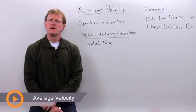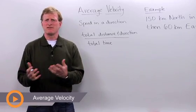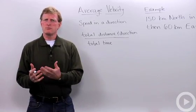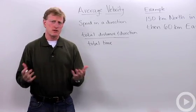Let's talk about average velocity. So what's the difference between speed and velocity? Well, speed is distance over time, 100 kilometers an hour.